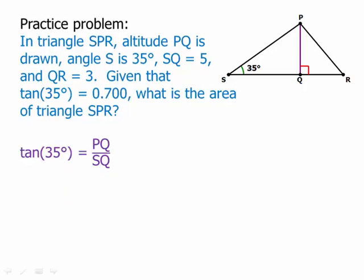Well, we know that the tangent of 35 degrees, that involves PQ. That's PQ over SQ. Well, that's good because we know SQ. That's H over SQ. We need that H. H equals 5 times tangent of 35 degrees. And here we can use the approximation they give us. Tangent of 35 degrees is 0.7.